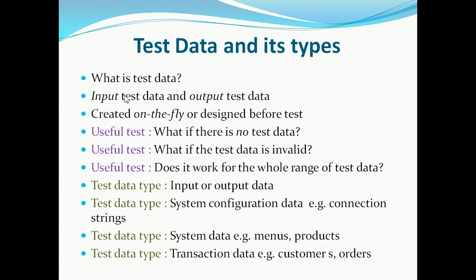Some useful tests you should always consider when designing test data: what if you don't give the test data — what output do you expect from the system when no test data is given? What if the test data is invalid — you can design some invalid test data and know what the expected output of the system should be. Another useful test is that you can design the input test data across its entire range so that it covers all the different equivalence classes. And corresponding to every input test data, you should also design the output test data that you are expecting from the system.